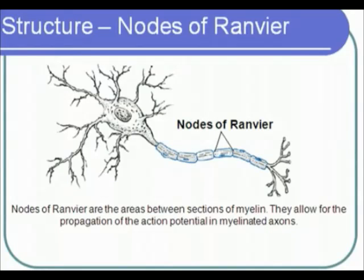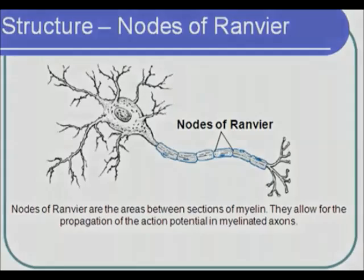The myelin sheath that surrounds many axons is not continuous. There are areas between sections of myelin called nodes of Ranvier. Nodes of Ranvier are not electrically insulated and they allow the neural signal to travel even faster by jumping from node to node down the axon.